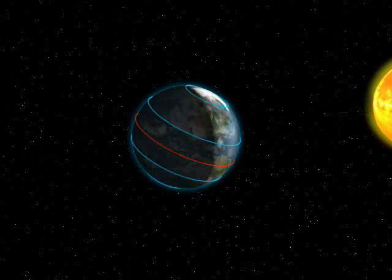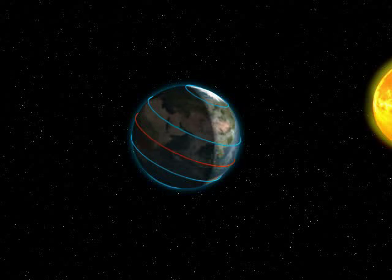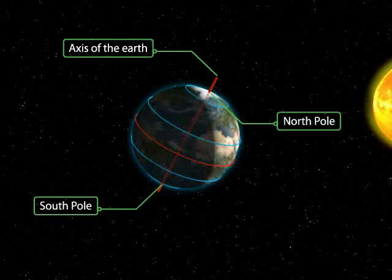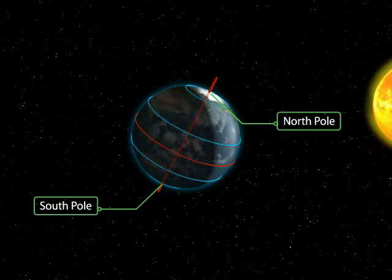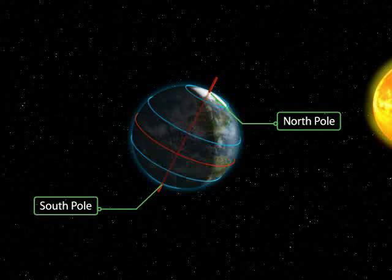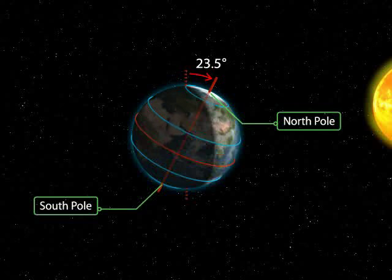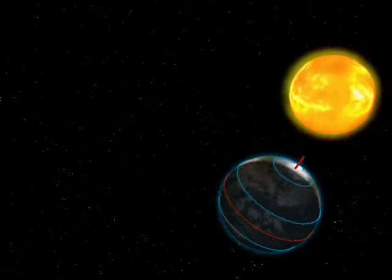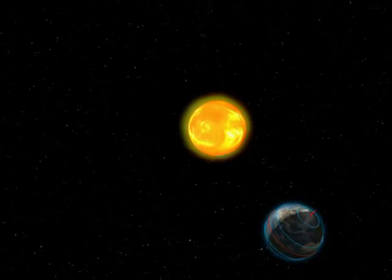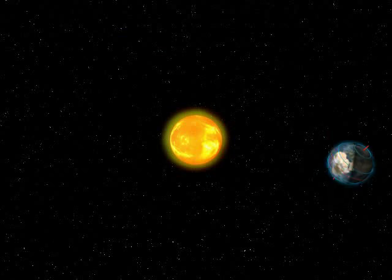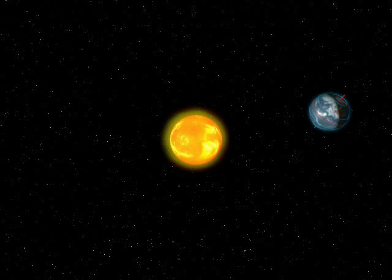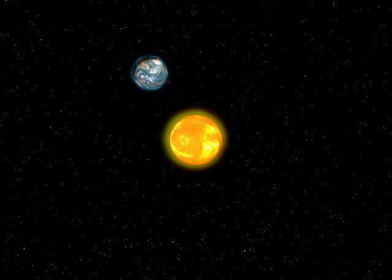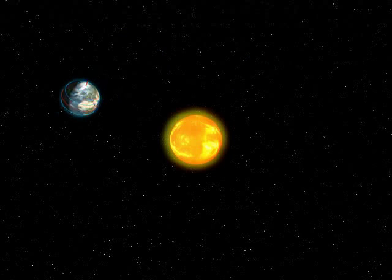The axis of the Earth is an imaginary line on which the Earth rotates. It links up the two poles. Both the axis and the Earth are tilted at an angle of 23.5 degrees during a revolution. The tilting of the axis results in direct sunlight falling on different places during different seasons, causing variations in the duration of days, nights and seasons.